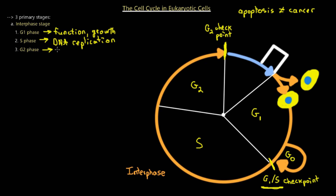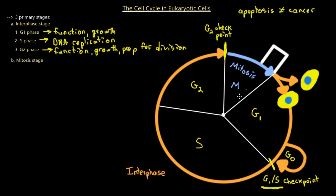To summarize the G2 phase: it continues function, growth, and preparation for division. What comes next is the mitosis stage — the M stage — which is the second stage of the cell cycle and involves cell division. It also contains another checkpoint called the spindle checkpoint. We'll talk further about the spindle checkpoint and mitosis in the next video, where we discuss the chromosomes associated with cell division.